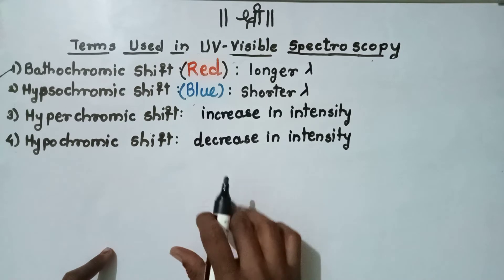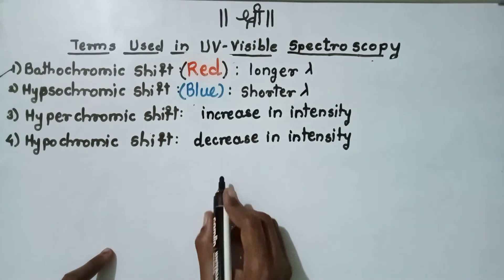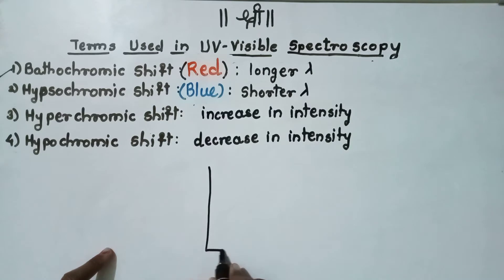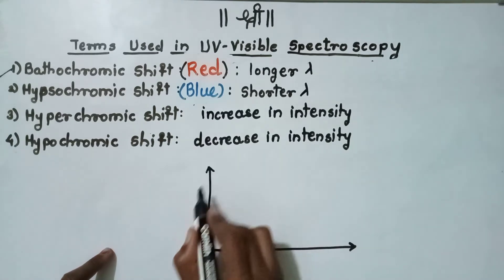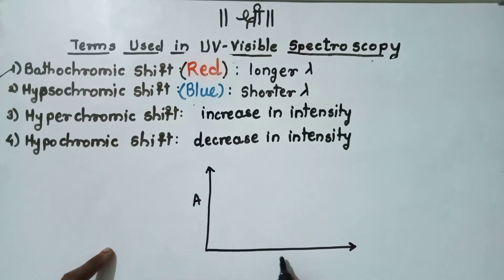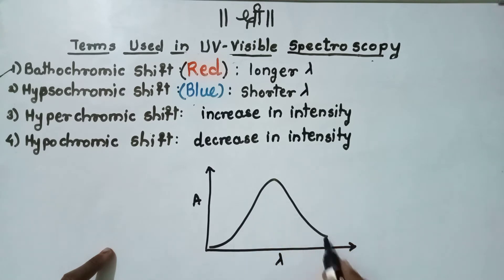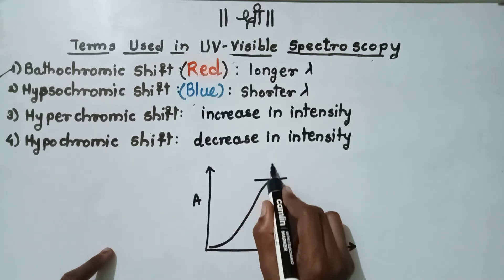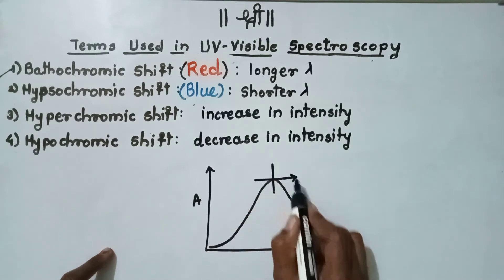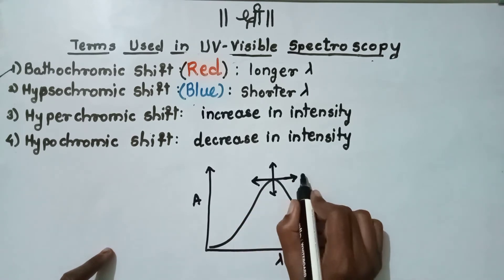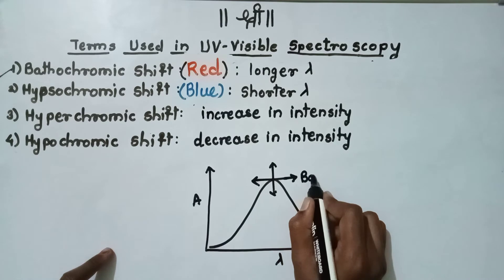Now we will see those four terms by using a graph of absorption against lambda. This is the reference spectra. When there is a shift in spectra towards the longer wavelength, then it is called as the bathochromic shift.